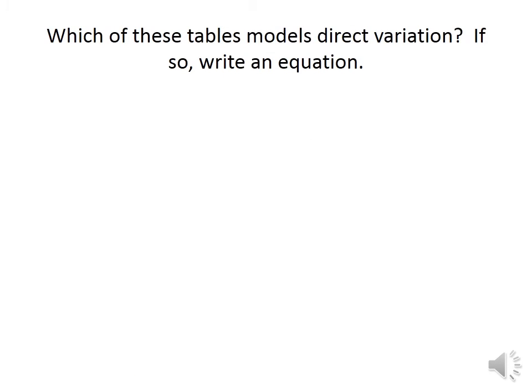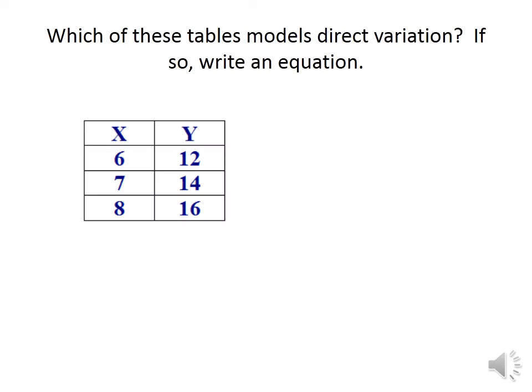Which of the following tables models a direct variation? If so, write the equation. The main point in direct variation is that the division y over x is always a constant value. In the first table: 12 divided by 6 equals 2; 14 divided by 7 equals 2; 16 divided by 8 equals 2. The ratio is always 2, so the relation is y equals 2x and this is a direct variation.